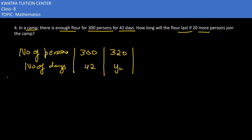First we have to think about which type of proportion this is — inverse or direct. If we increase the number of persons, the number of days will decrease. So if we increase one quantity, the other quantity will decrease, which means it is a kind of inverse proportion.